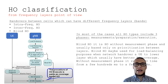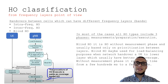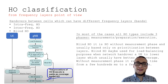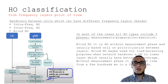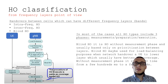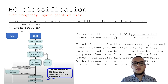We may also classify handovers from a frequency layers point of view. A handover between different cells on the same frequencies is called intra-frequency. A handover between different cells on different frequencies is called inter-frequency. There is also a blind handover. Usually, handover has three steps: measurement, preparation, and execution. A blind handover has only preparation and execution phases — without measurements — in order to reduce time, since measurements can take from a few milliseconds to a few seconds, which for some scenarios can be very useful.